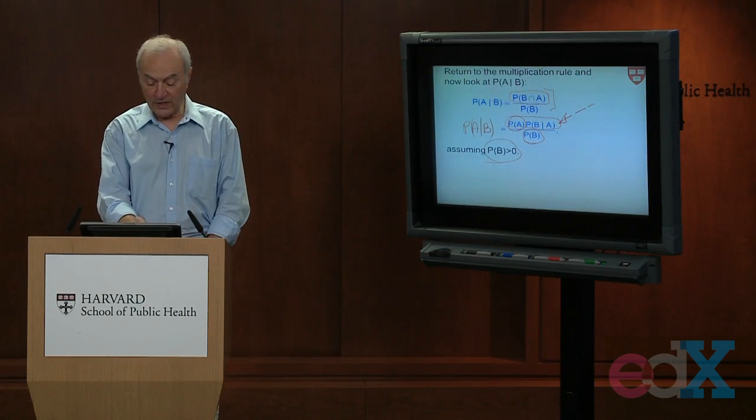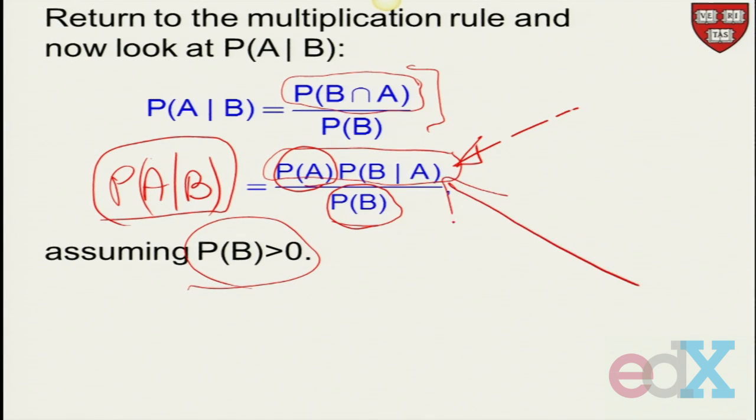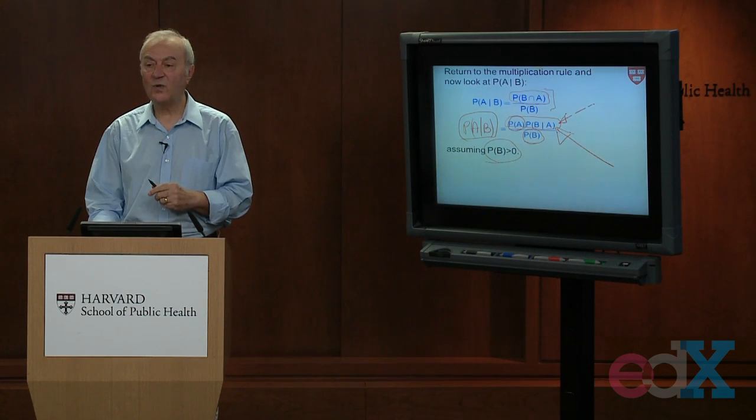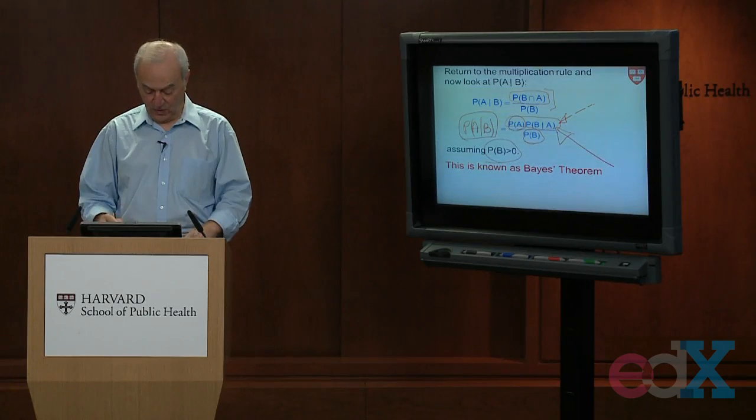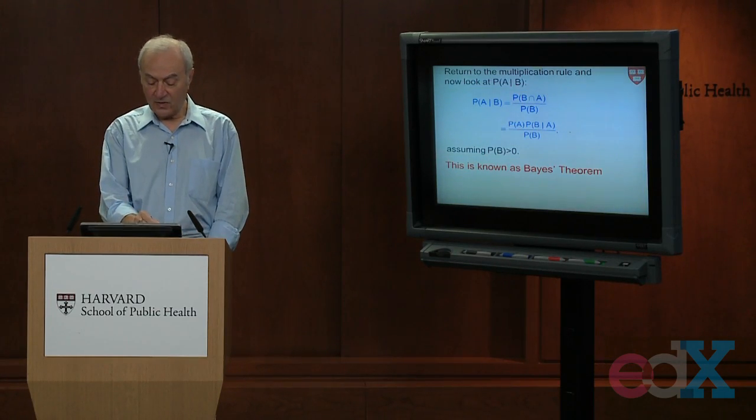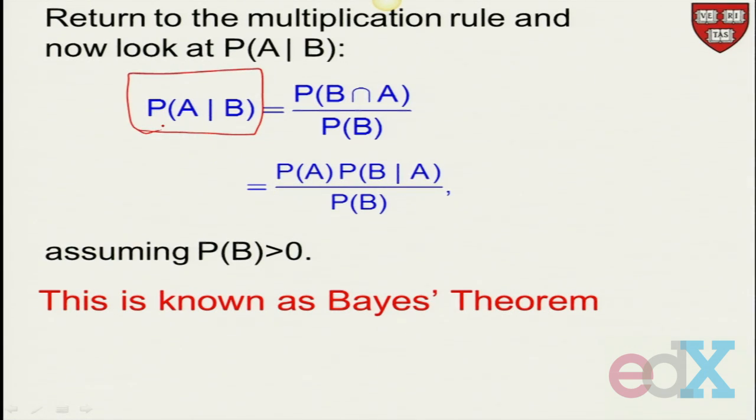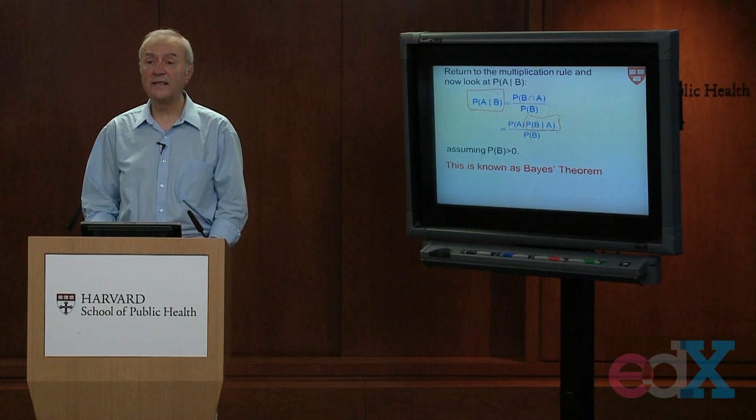So we go from conditioning on B to conditioning on A, which we're going to find very useful when we get to diagnostic testing. Extremely useful. So this formula here is called Bayes' theorem. Bayes' theorem allows us to express the probability of A given B as a function of the probability of B given A, reversing the roles of the conditioning event. It's a wonderful theorem that we'll use repeatedly, especially coming up.